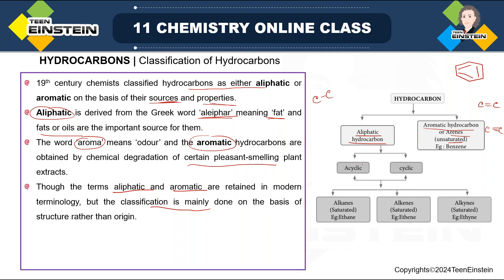Alkanes will be saturated; alkenes and alkynes are unsaturated. A good example under acyclic alkanes is ethane, CH₃–CH₃, where there is no C=C double bond. For alkenes, a double bond is introduced and the number of hydrogens is reduced, giving C₂H₄. For alkynes, there is a triple bond: HC≡CH. So gradually the number of hydrogens decreases. These terms are now based on structure rather than origin.